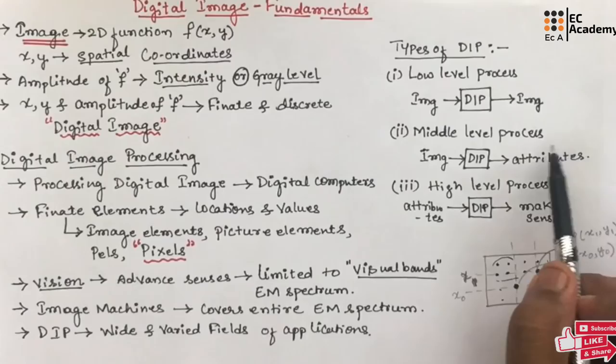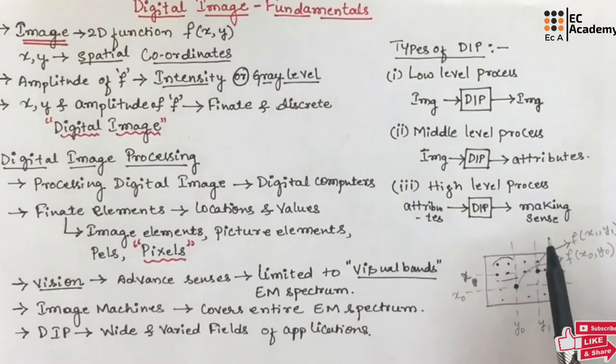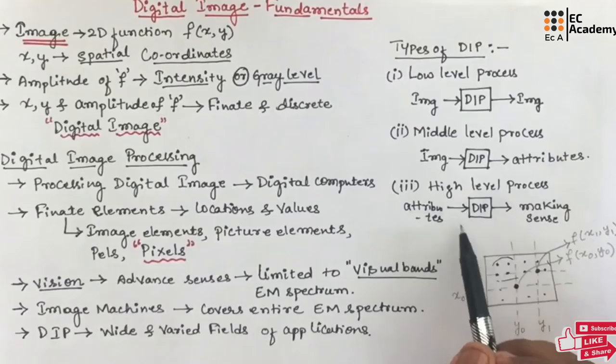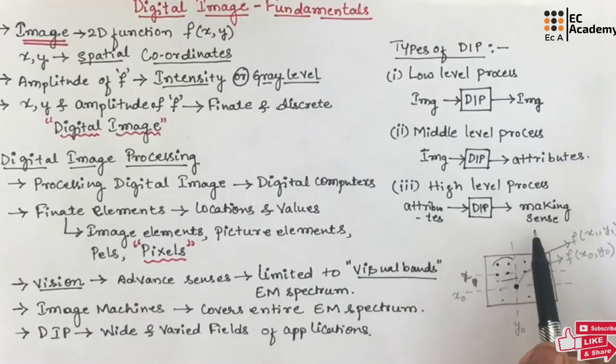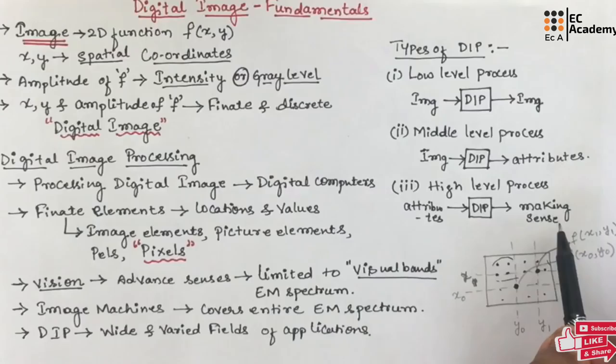In high level processing, input will be attributes and the output is what we call making sense. For example, if we need to recognize an object, we give the image of an object to the system and the system processes that image to identify it — for instance, if we give the image of a ball, the system gives the output that the image is identified as a ball. This is about the fundamentals of digital images. Hope you have understood the topic. Thank you.